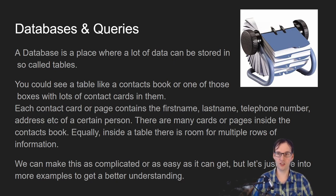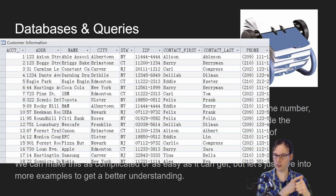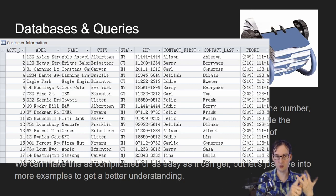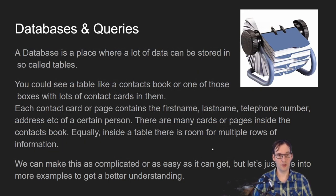There are many contacts in one book. Equally, inside a table there is room for multiple rows of information. So a table is to be compared with the whole Rolodex — it could be named 'contacts' or 'business contacts'. For every row you would have the contact person's name, phone number, business email address, business name, and business website — all stored in a table.